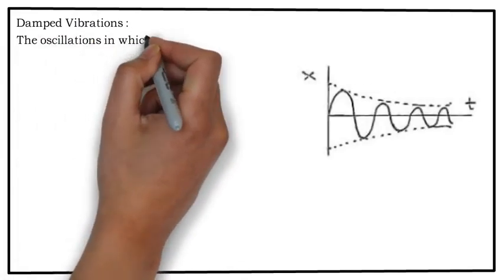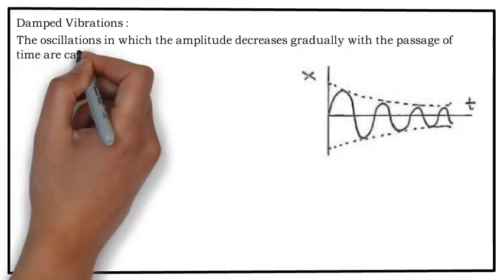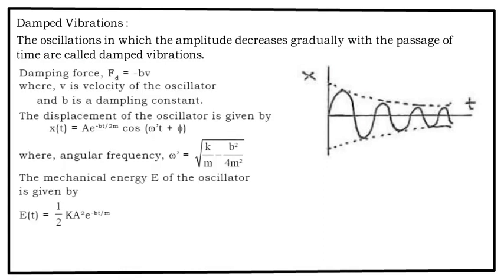Now damped vibrations. This is something which is very important. The oscillations in which the amplitude decreases gradually with the passage of time are called damped vibrations. Damping force Fd = -Bv where v is the velocity of oscillator and B is a damping constant. The displacement of the oscillator is given by - you have the formula x as a function of T: x = A·e^(-Bt/2M)·cos(ω't + φ), where ω' = √(K/M - B²/4M²). The mechanical energy E of the oscillator is given by (1/2)KA² and here the amplitude would decrease with time. So the value of amplitude is A·e^(-Bt/2M). So when I put that value I get (1/2)KA²·e^(-Bt/M).